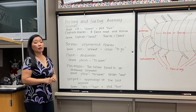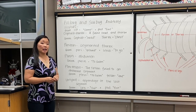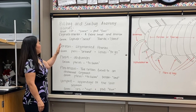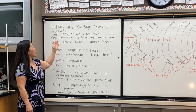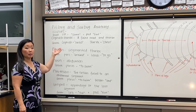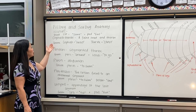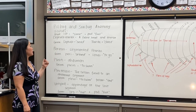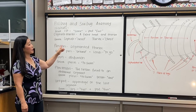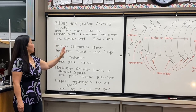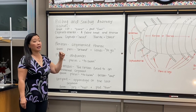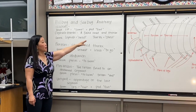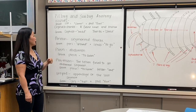In the pill bug anatomy there are a lot of Greek root words. Pill bugs and sow bugs are from a group called isopods, which in Greek means iso - same - and pod - foot. The cephalothorax is a fused head and thorax; in Greek, cephalo means head and thorax is the chest area.